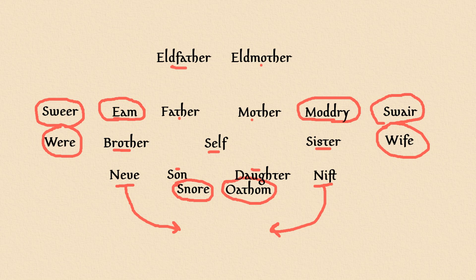Old English had more to it — there are a lot of unusual things, like I think madri could also be used to refer to a female cousin, and then swear could be used to refer to a male cousin on your father's side.